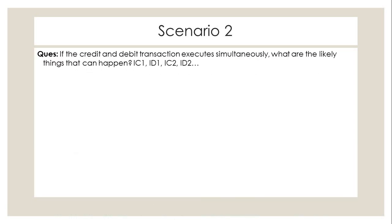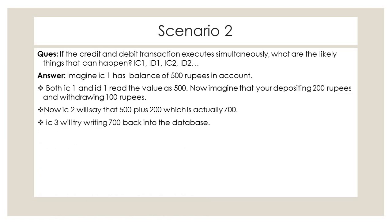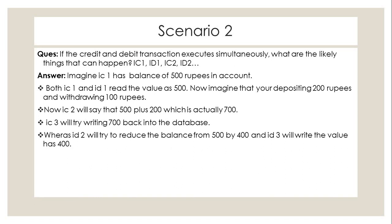The second scenario is: what if the credit and debit transactions execute simultaneously? Imagine IC1 credits an amount of 500, and ID1 tries to withdraw 100 rupees at the same time. IC2 would then say 500 plus 200 equals 700, so IC3 updates 700 in the database. But ID2 tries to reduce the balance from 500 by 100 to get 400, and ID3 writes 400. So we end up with a conflict: 400 versus 700.